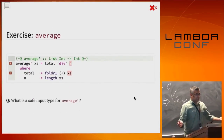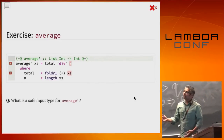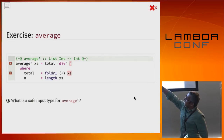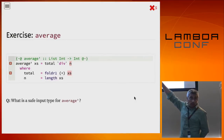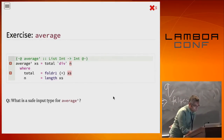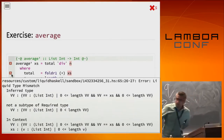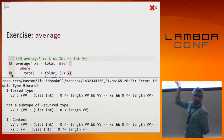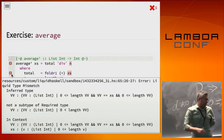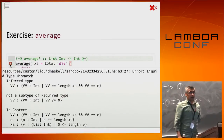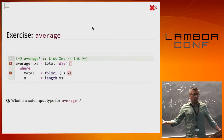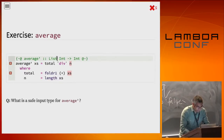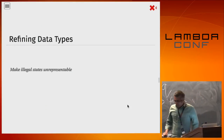How would we tweak the type of average so it type checks? There are a bunch of errors: n calls length which may be non-zero, and fold1 also expects non-empty lists. The simple fix is to make the input a ListAny (not-empty list). I simply change it to List Any and now we can go home.